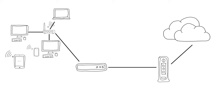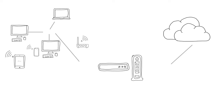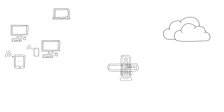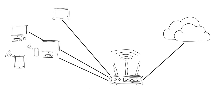Because most people need a switch, a router, and a modem, their functions — creating a LAN, connecting to a WAN, and gaining access to telephone or TV cables — are nearly always combined into one device that can do it all. You often rent or buy this all-in-one device from the company that provides you with access to the internet.